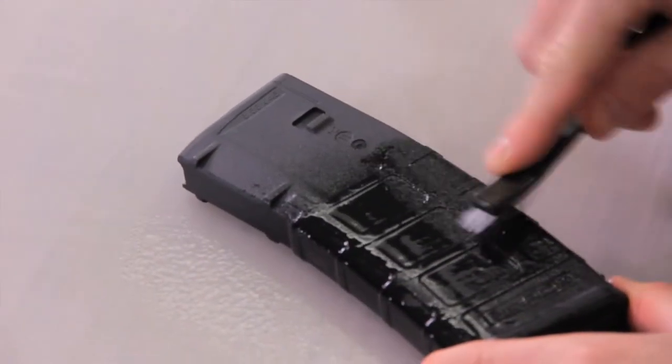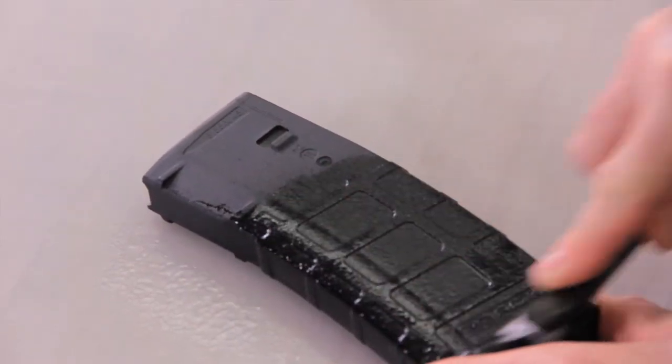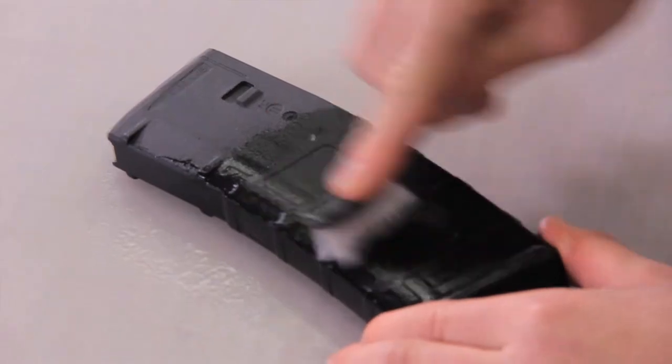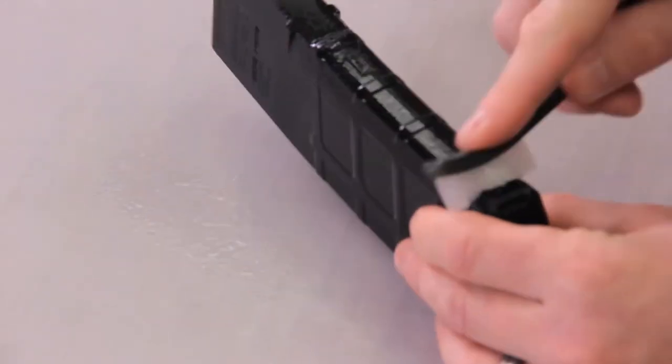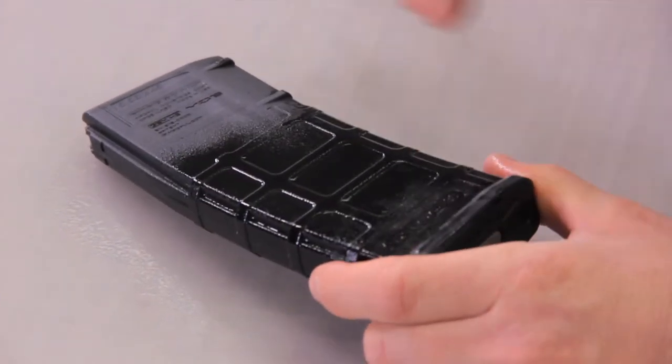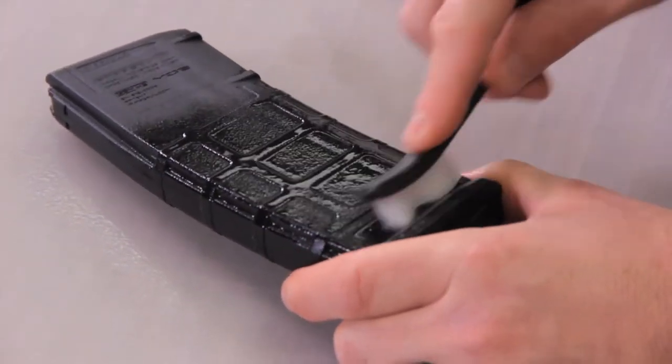I'm going to take my brush and scrub it. You really want to work the recessed areas, whether it's a P mag or the hex mags or those ridges in the GI mags. Just make sure you get it down in the bottom and get it real clean.